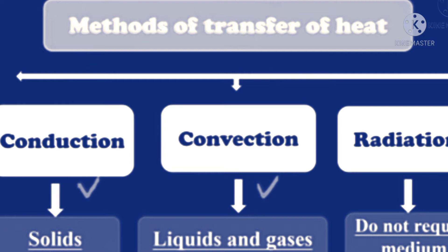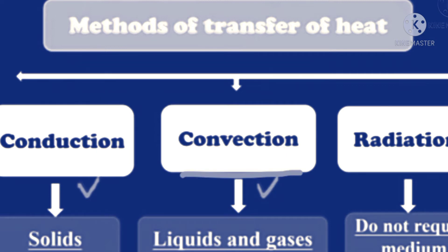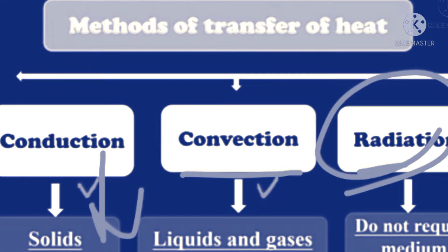Heat transfer from hot body to cold body can take place in three different ways: conduction, convection, and radiation. Conduction mein heat solid medium se transfer hota hai. Convection mein liquid and gas mein transfer hota hai. Radiation mein kisi bhi medium ki zaroorat nahi hoti — radiation does not require any medium.